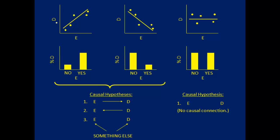When you have a continuous disease variable, you can have a continuous exposure, but also a binary or categorical exposure with three levels. Similarly, if you have a binary outcome, you don't have to have a binary or categorical exposure — you can have a continuous exposure. We've just used these combinations as the clearest way to illustrate the connection between data patterns and causal hypotheses.